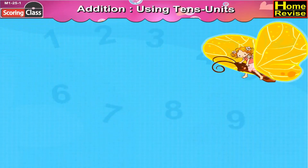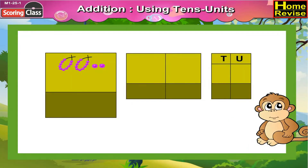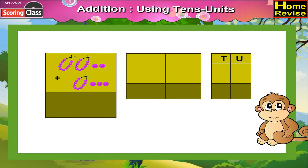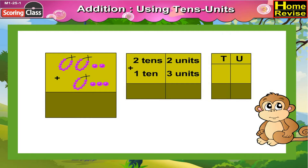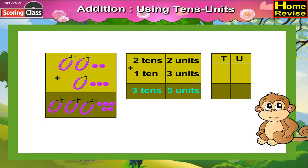Addition using 10 units. Now children, can you see the string of beads? In the first picture, there are 2 strings of 10 beads and 2 single beads. We have to add 1 string of 10 beads and 3 single beads more. That would be 3 strings of 10 beads and 5 single beads, which means 3 tenths 5 units.